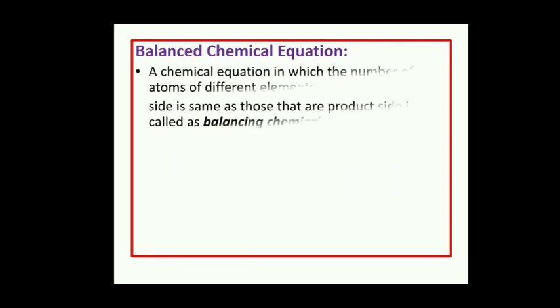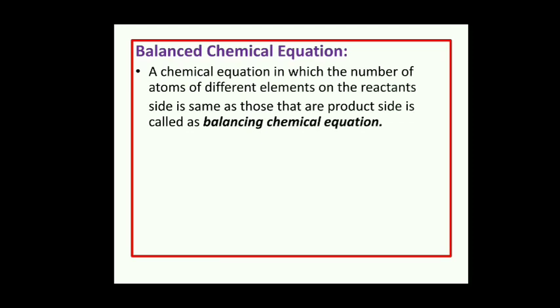What is a balanced equation? A chemical equation in which the number of atoms of different elements on the reactant side is the same as those on the product side is called a balanced equation. For example, Na2SO4 plus BaCl2 gives BaSO4 plus 2NaCl. This is a balanced equation where sodium sulfate reacts with barium chloride to give barium sulfate and sodium chloride.